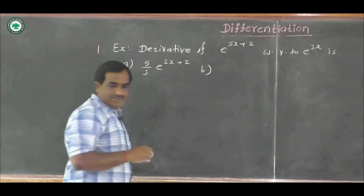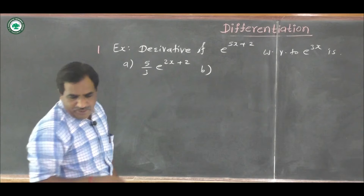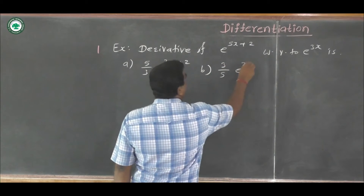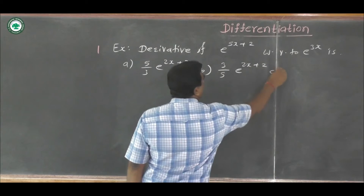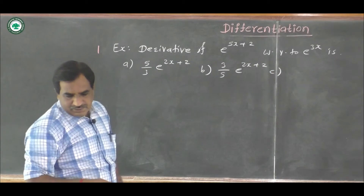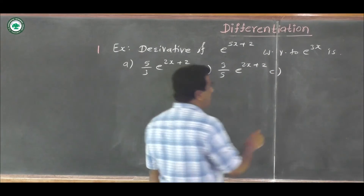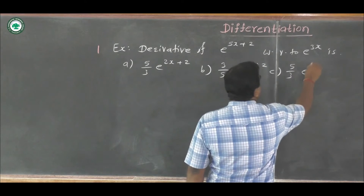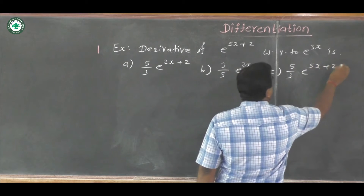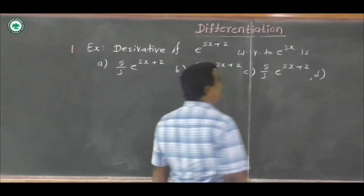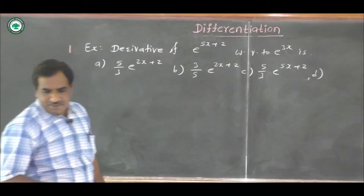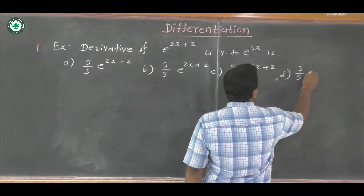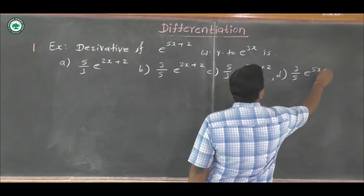Option B is (3 upon 5) into e raised to (2x plus 2). Option C is (5 by 3) into e raised to (5x plus 2). Option D is (3 by 5) into e raised to (5x plus 2).